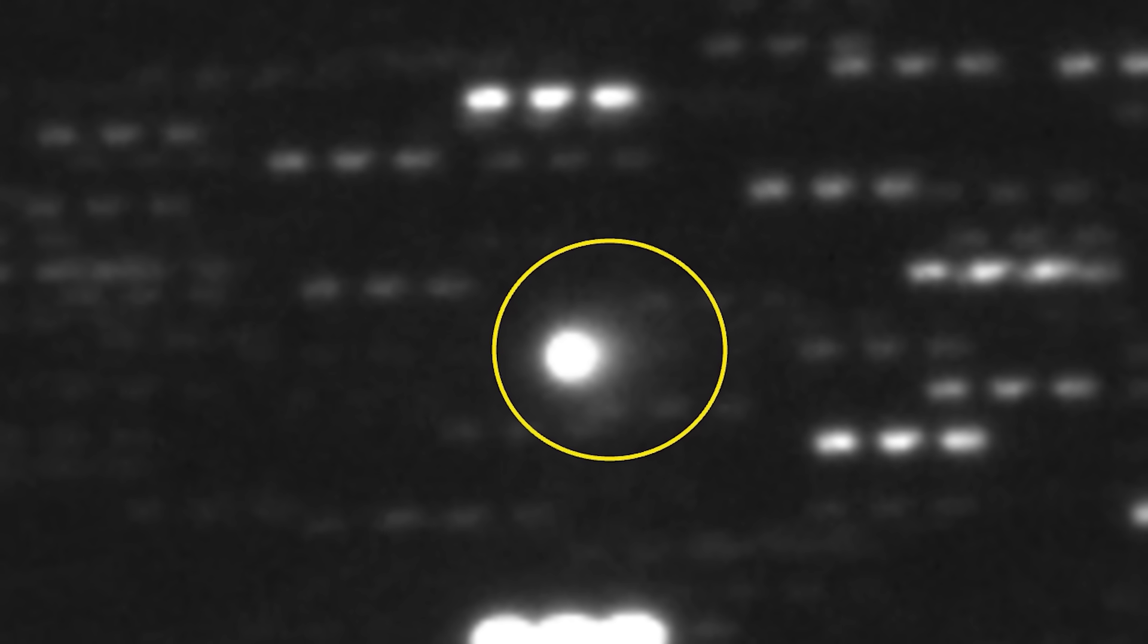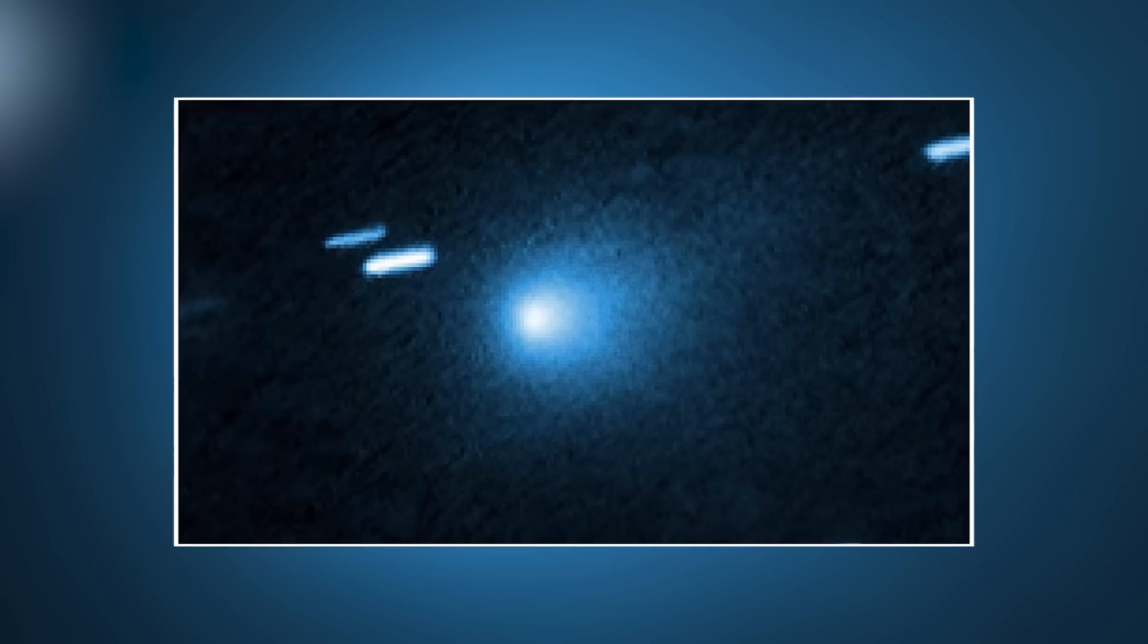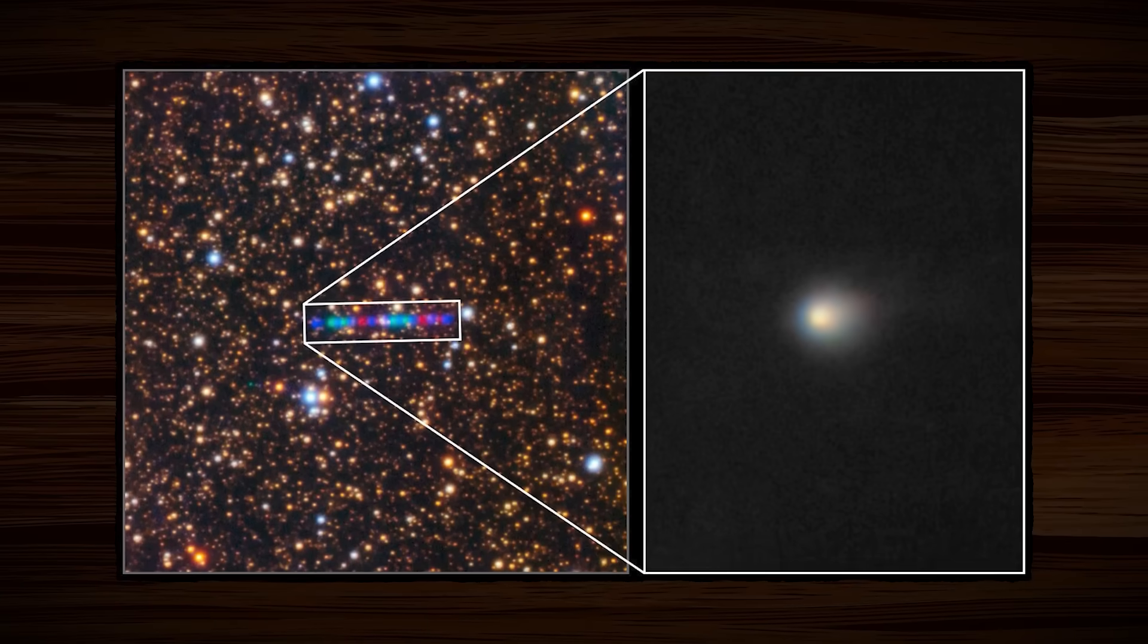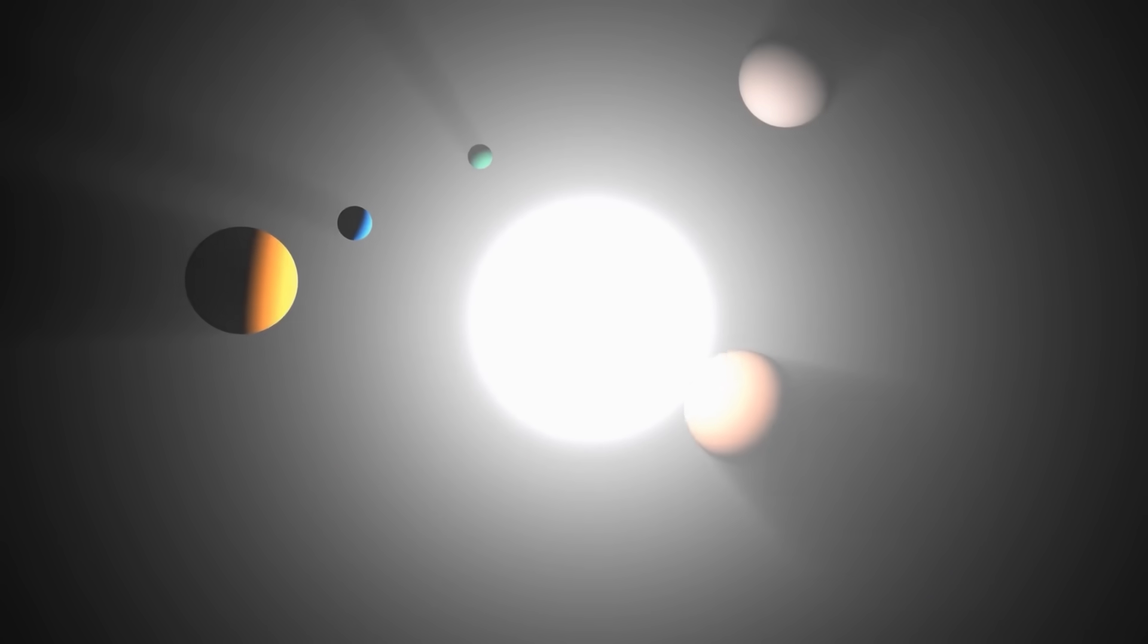Its path was all wrong. It was a traveler from the great beyond, an interstellar object. Only the third one humanity has ever confirmed. They named it Three-Eye Atlas. At first, it was a cause for celebration. A rare chance to study a piece of another star system right here in our own backyard.